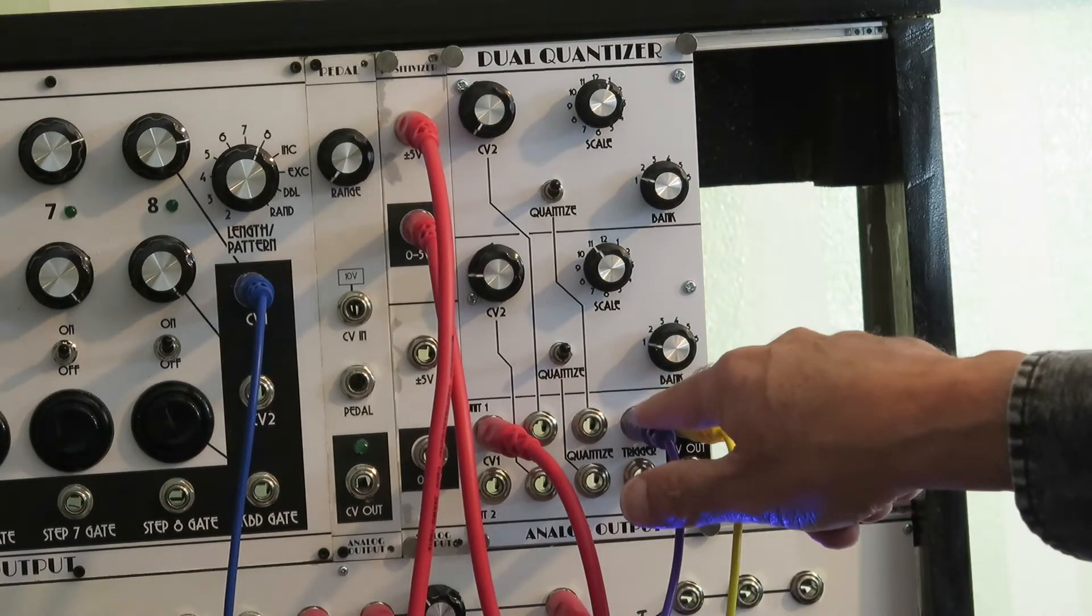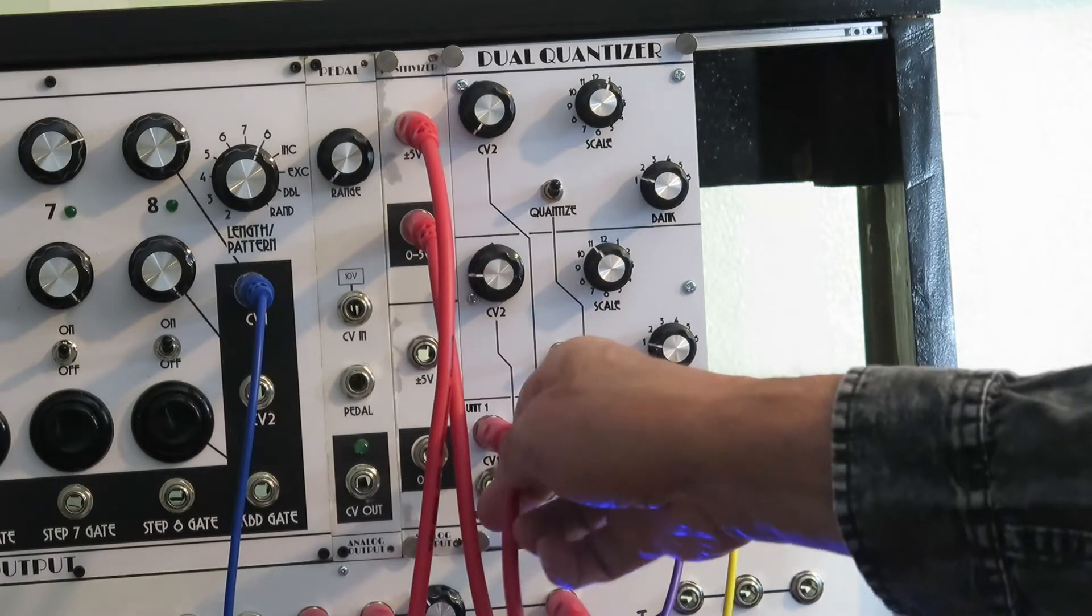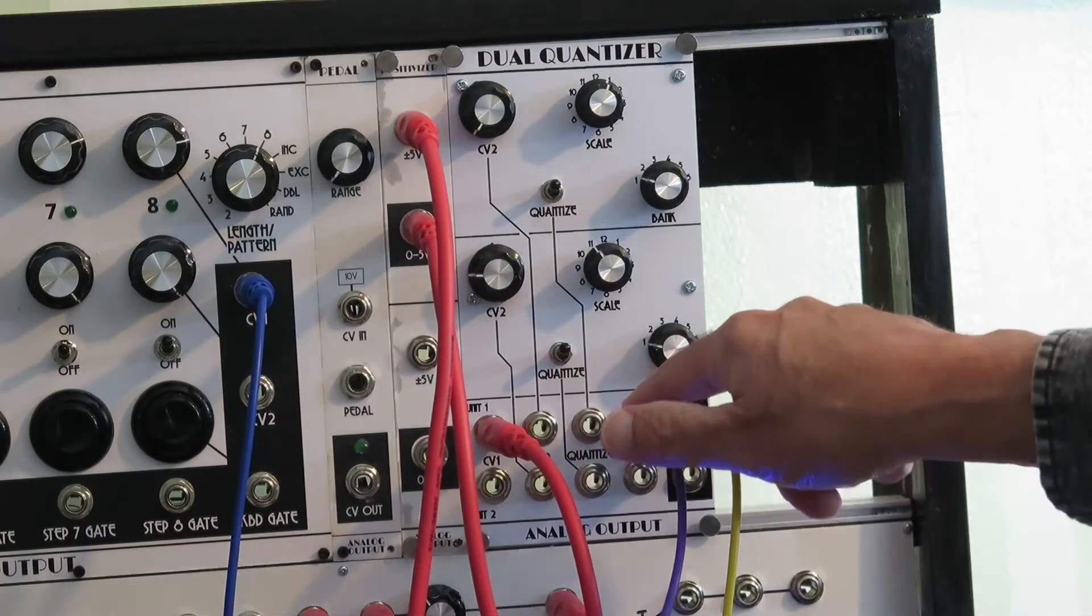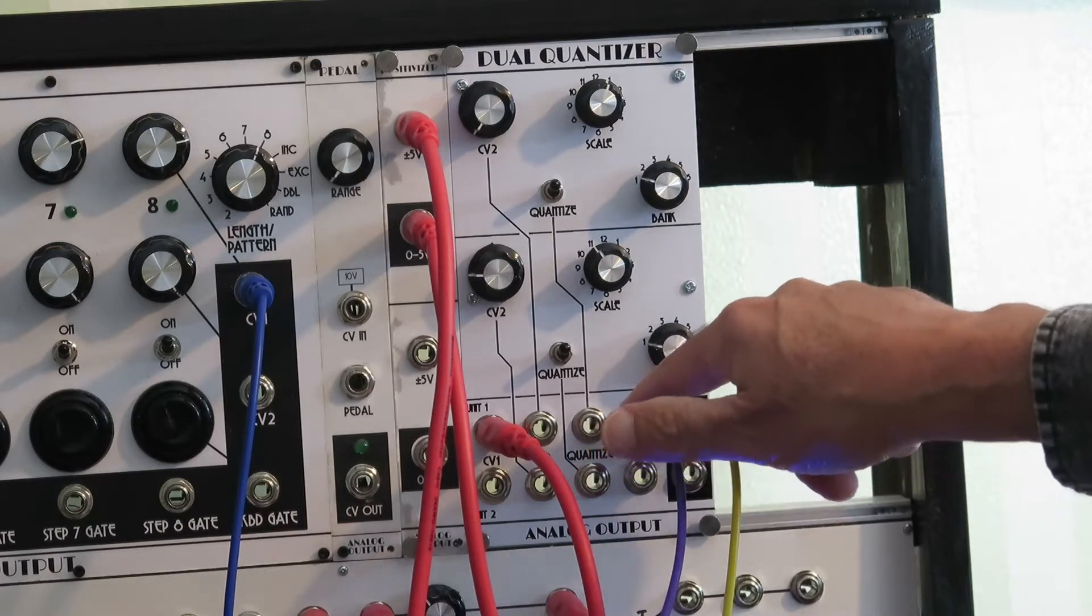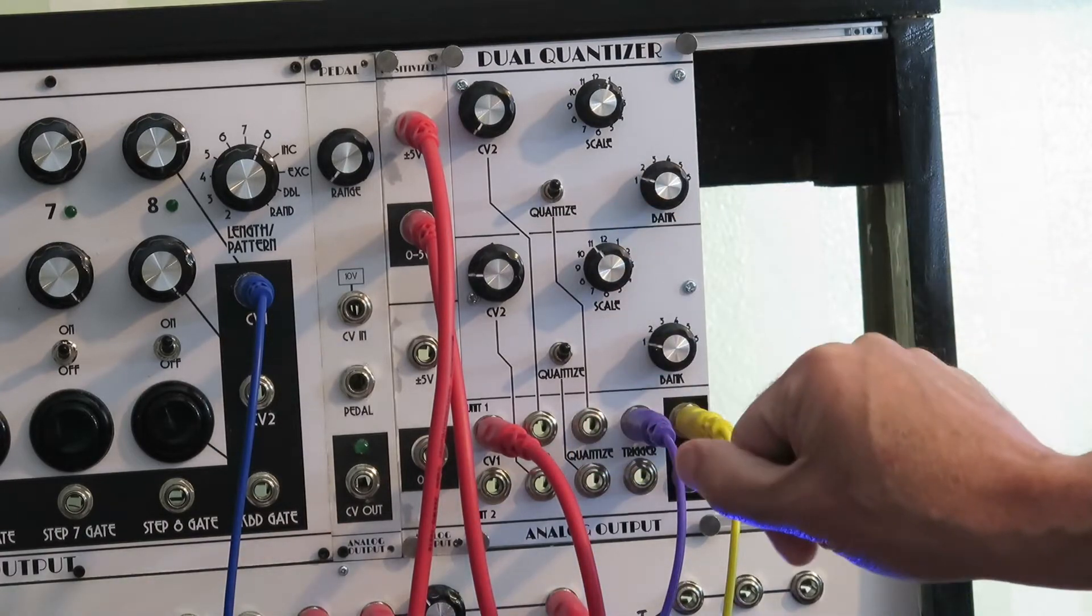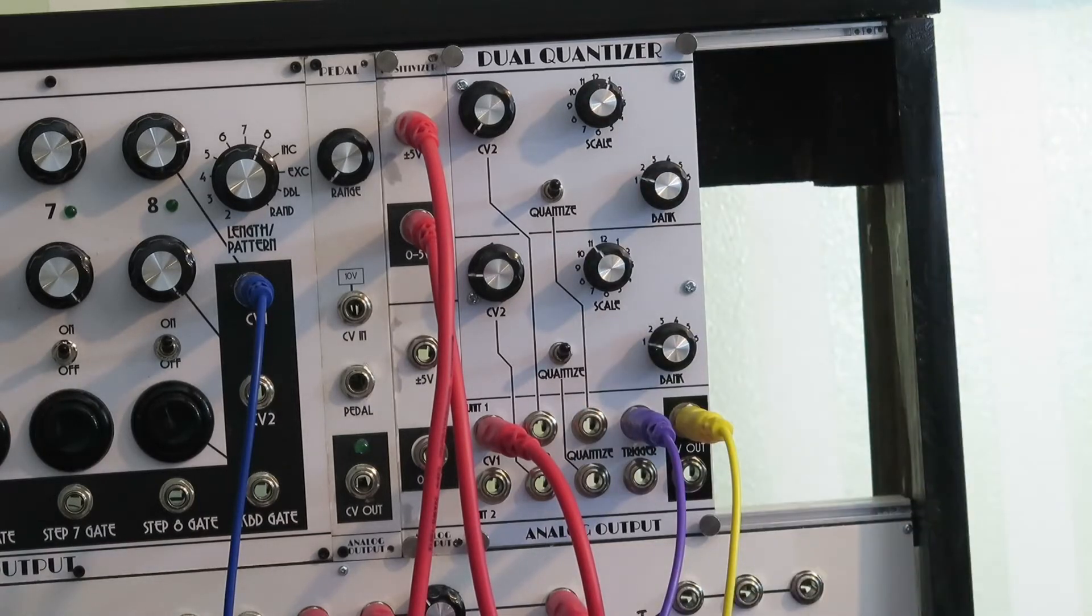Okay, now I've got something going into the trigger input and I've got random noise, white noise going in on the control voltage here. When you've got something plugged in on trigger, if there's no trigger present, it doesn't sample the input. It just holds the output at whatever it was.